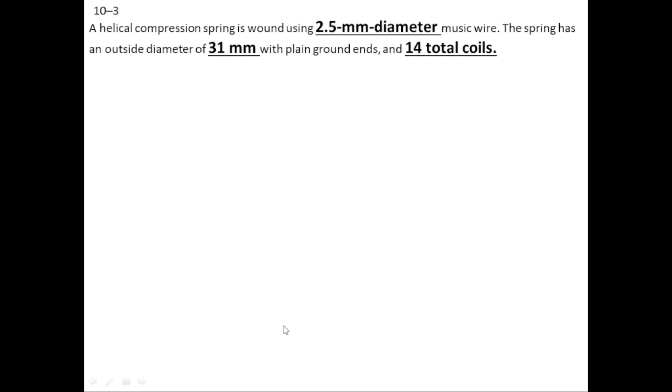In today's lecture we will do problem 10.3, related to helical compression spring. Previously we have done the theory part. Here we are given that the wire diameter of the spring is 2.5 millimeters and the spring outside diameter is 31 millimeters. From the top view, the internal and external diameters are shown, and from the external diameter we can find the mean diameter of the spring.